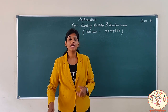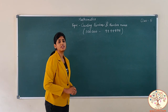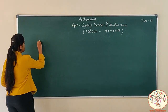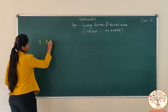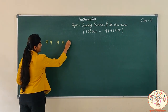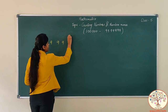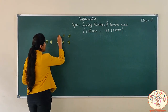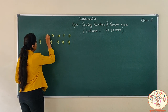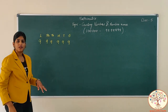Now we are going to read about 7-digit numbers. The largest 6-digit number we have learned is 9 lakh 99,999. The place values are 1s, 10s, 100, 1000, 10,000 and lakhs, right?